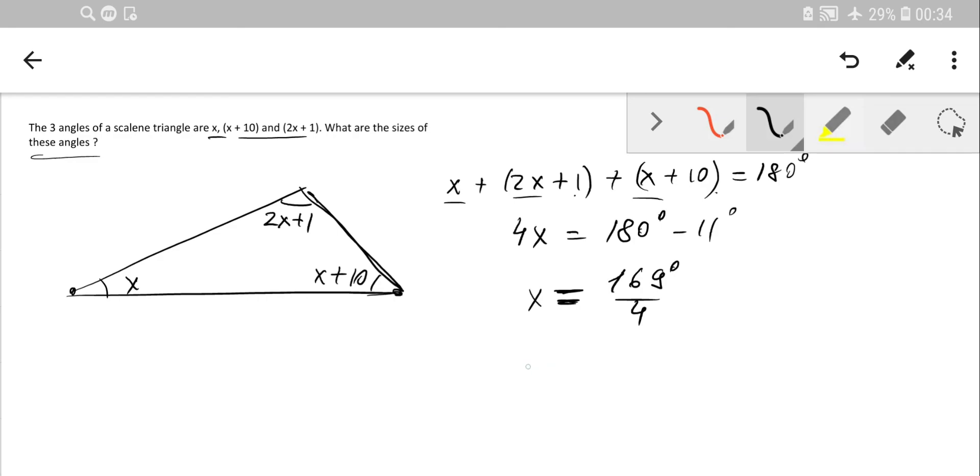Next angle is 2X plus 1, so simply write the following: 169 over 2 multiplied by 2 here, and we just add 1. So angle 2X plus 1 is equal to 171 over 2.